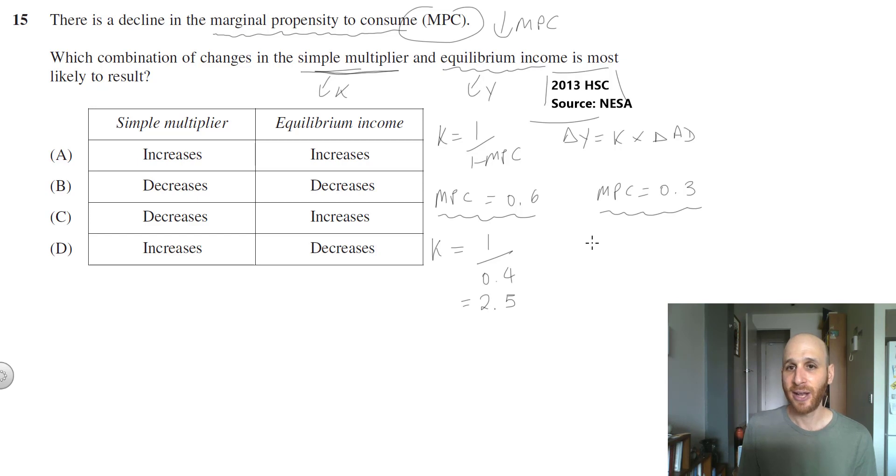If we then look at MPC equals 0.3, K equals 1 over 1 minus MPC, which is 0.7, which is equal to approximately 1.42. So we know now that if we get a decline in MPC, then we're going to see a decline in the power of the multiplier, which makes sense because if more people are saving then there's going to be less spending and injections in the economy.